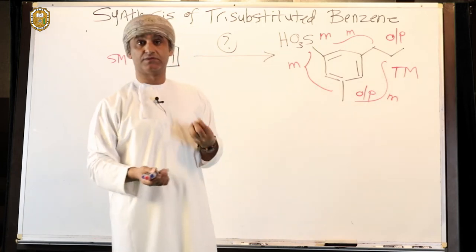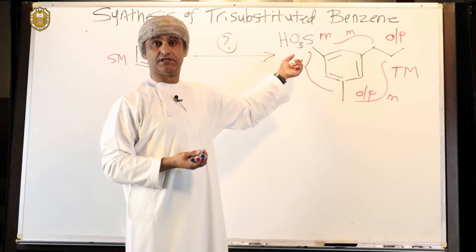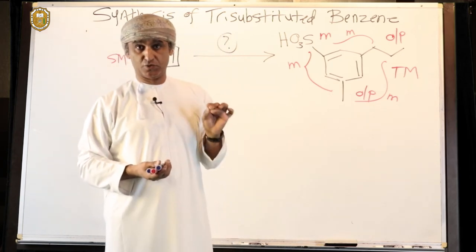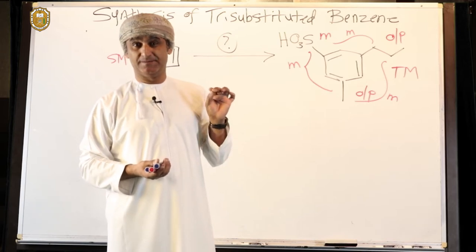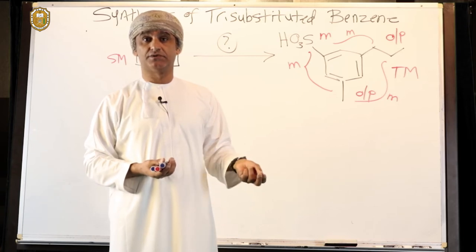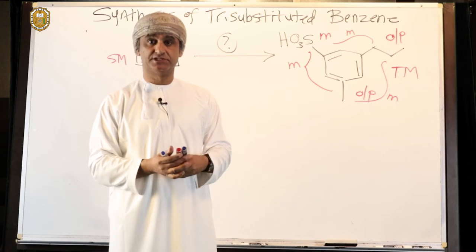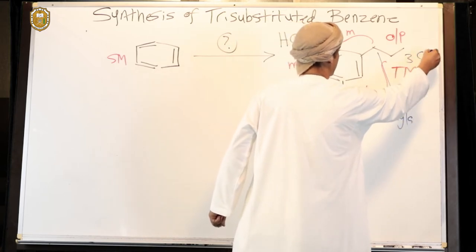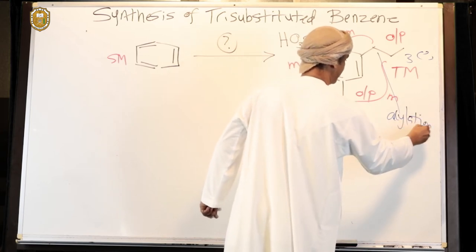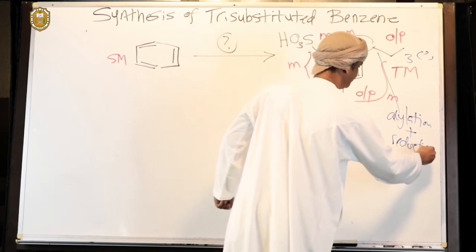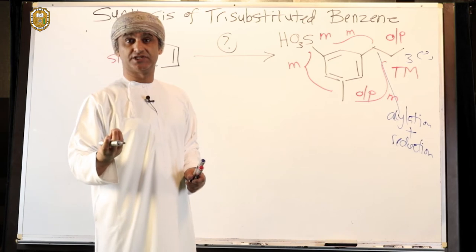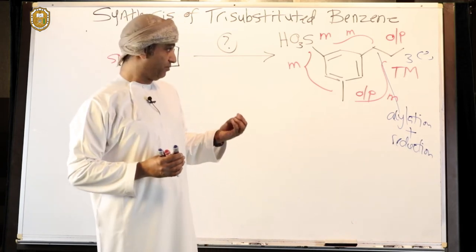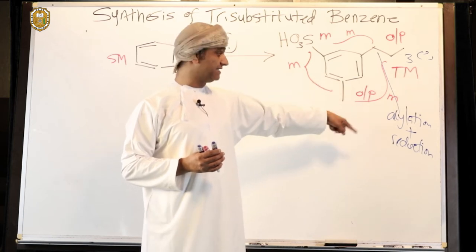The methyl group and the sulfonyl group are meta with each other, so we can do methylation after sulfonation. The propyl group consists of three carbons, and if you recall, a group which consists of three carbons or more should be synthesized following the two-step sequence: acylation followed by reduction — Friedel-Crafts acylation followed by reduction. After acylation, we install a ketone functionality. Ketone, just like sulfonyl groups, are electron-withdrawing groups by resonance and are meta-directors. So we should do methylation after the acylation, in between these two steps.